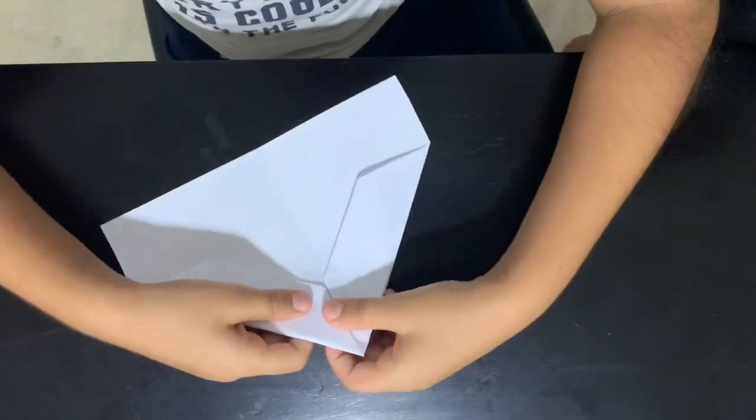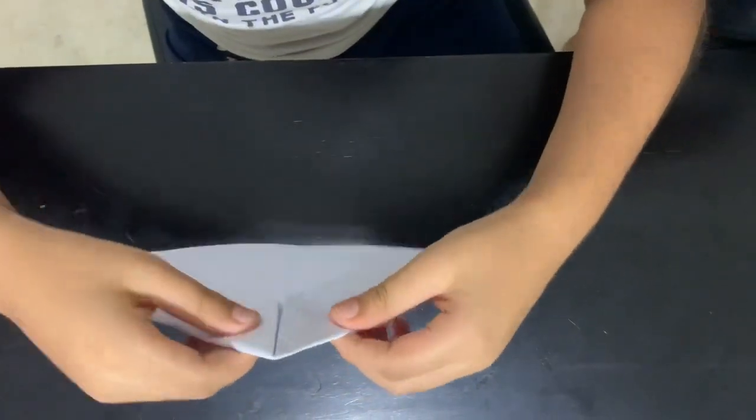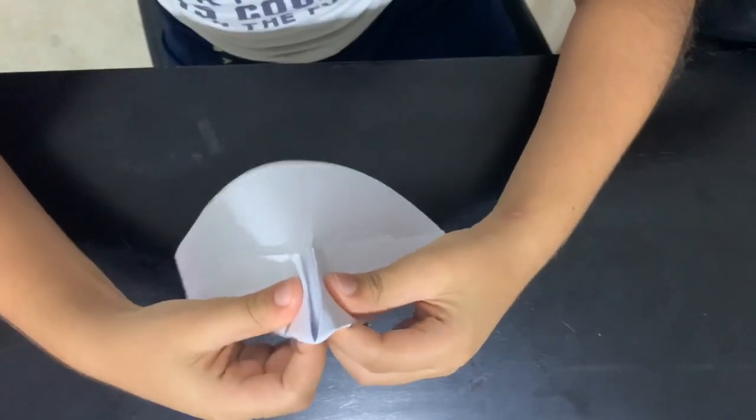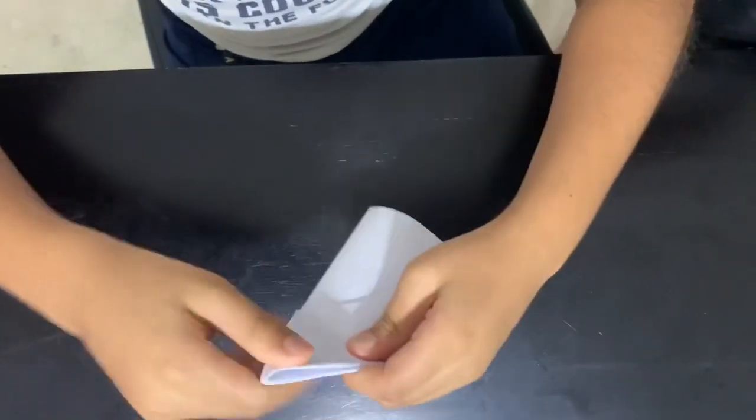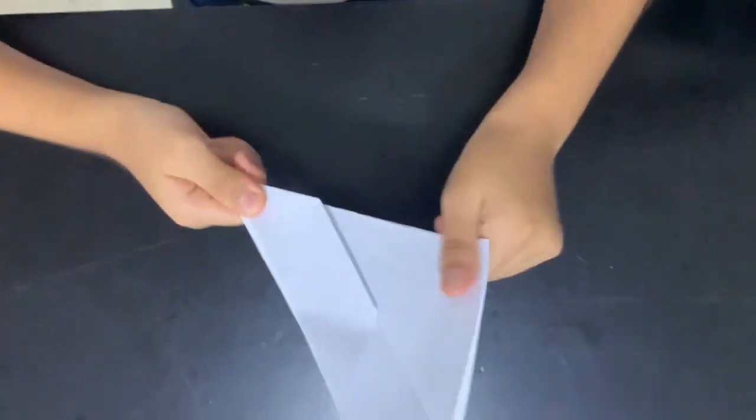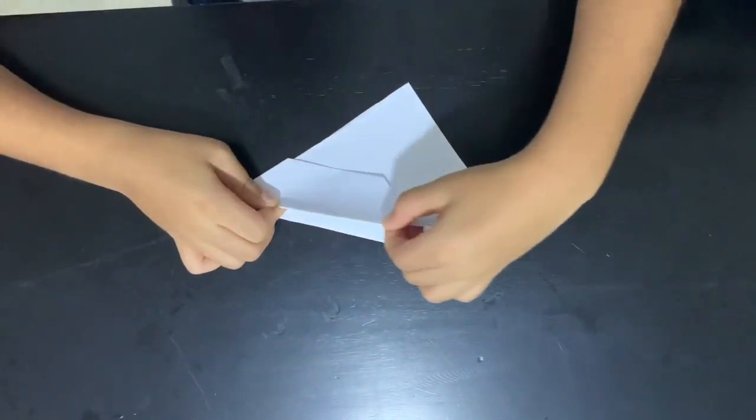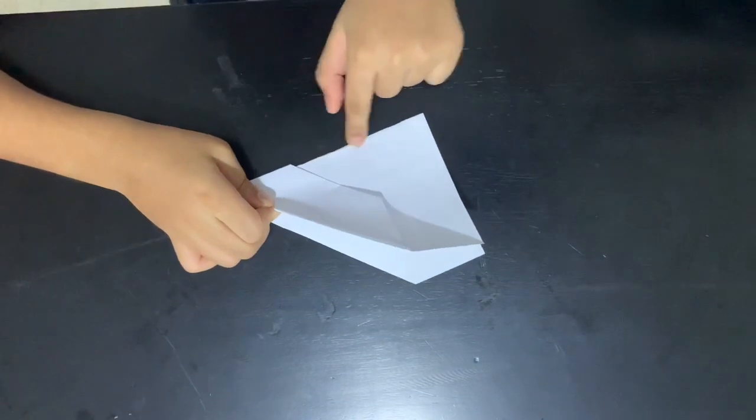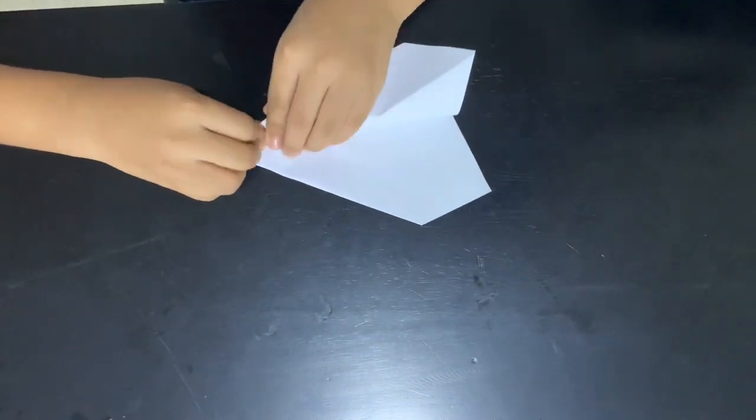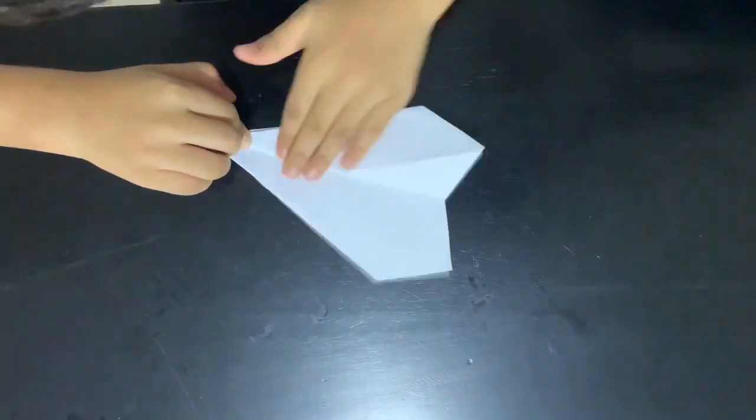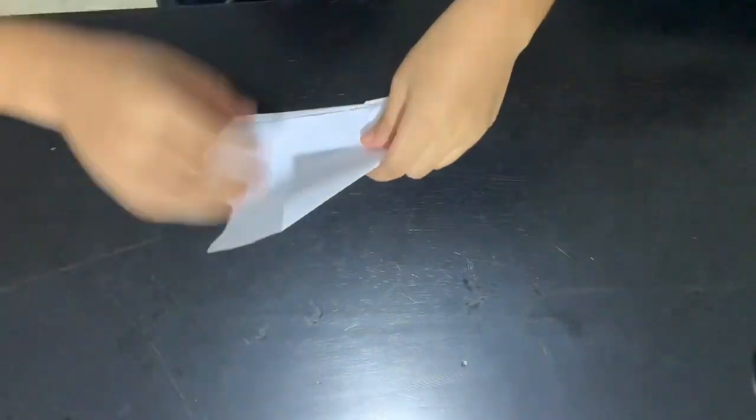And then do a mountain fold on the other side. Then fold this edge all the way to this one like this. Do the same on the other side.